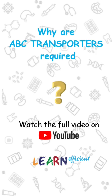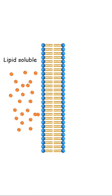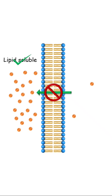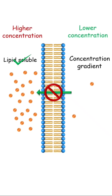This is why ABC transporters are required. A highly lipid soluble drug will easily enter the cell by simple diffusion. Now, these molecules cannot easily exit the cell. Why? The problem here is not lipid solubility, but the fact that these molecules must move against their concentration gradient.